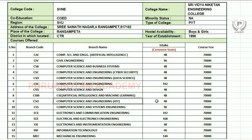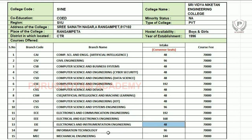Computer Science Engineering with IoT has 48 seats. Computer Science and Systems Engineering has 96 seats. Electronics and Communication Engineering has 192 seats. Electrical and Electronics Engineering has 168 seats. Electronics and Instrumentation Engineering has 48 seats. Information Technology has 96 seats. Mechanical Engineering has 144 seats.